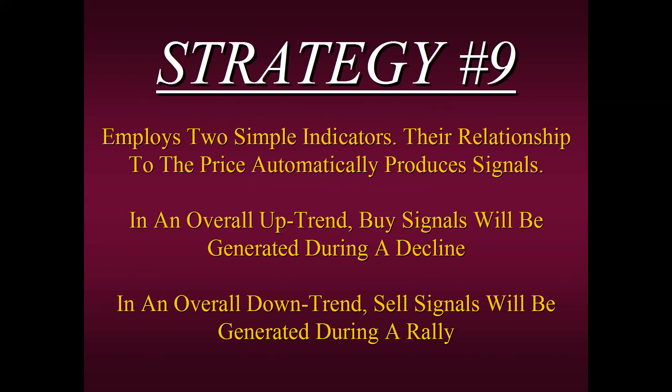Please, if you decide to become a student, learn the strategy and paper trade first. Our edge is consistency — a consistent method is one that's able to recoup losses with a two-steps-forward, one-step-back approach. I can't give away the exact rules because strategy number nine is an extremely simple method, but it employs two simple indicators whose relationship to price automatically produces the signal. In an overall uptrend, buy signals are generated during the decline; in a downtrend, sell signals are generated during a rally.